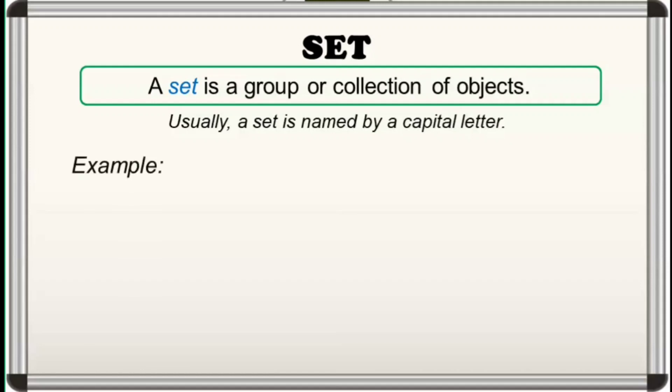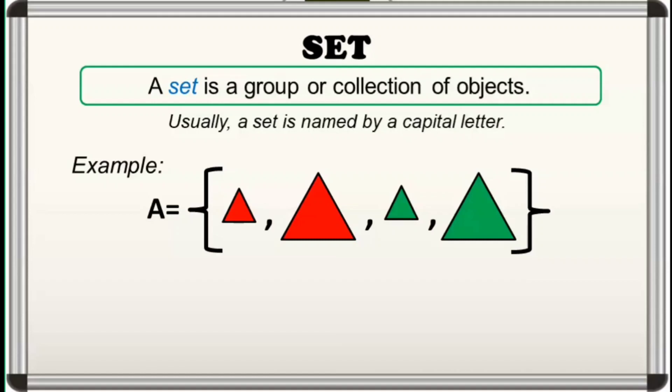For example, for the set of triangles, we can name it as set A. And for the set of small attribute pieces, we can name it as set B.